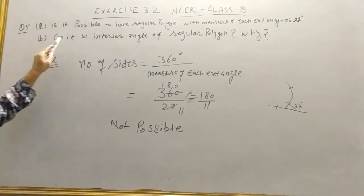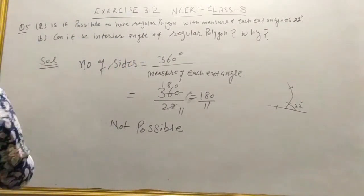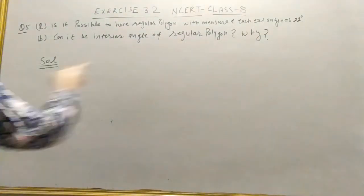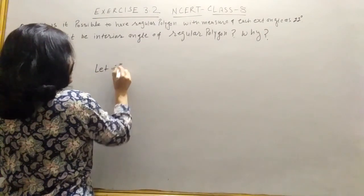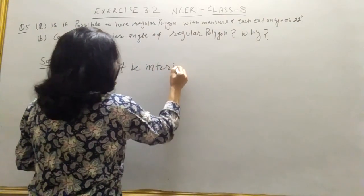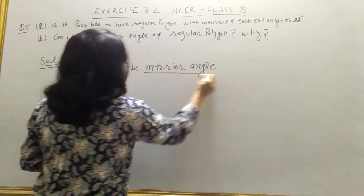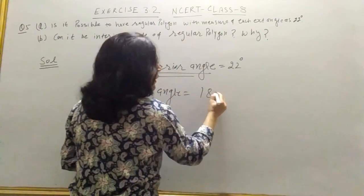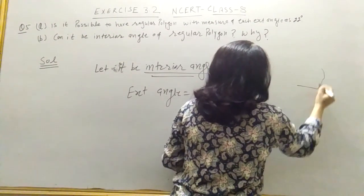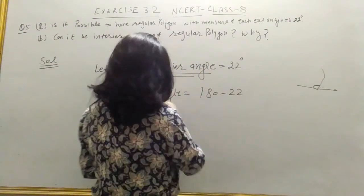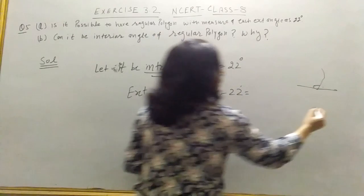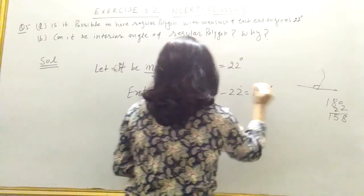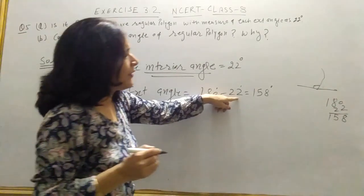Now in the second part, he is asking: can 22 degrees be an interior angle of a regular polygon? Let it be the interior angle — interior angle is 22 degrees. So what will be the exterior angle? Exterior angle will be 180 minus 22, because you know that interior and exterior angles are a linear pair. So exterior angle will be 180 minus 22, which is 158 degrees.